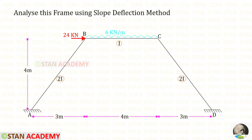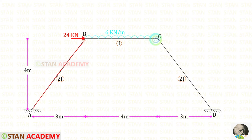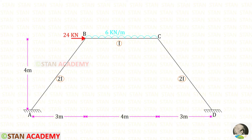Hello everyone. Today we are going to analyze this frame using the slope deflection method. In this frame there are two inclined members AB and CD, and also a horizontal member BC. The moment of inertia for AB and CD is 2I, and for BC it is I. In AB and CD there is no load. In BC, we have a uniformly distributed load of 6 kN per meter acting for the full span. At joint B, there is a nodal point load of 24 kN acting towards the right side.